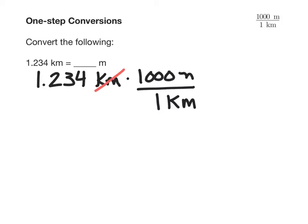When I divide kilometers on top by kilometers, they'll cancel. So that's good. We're going to be left with meters on top, and rewriting this as 1.234 times 1,000 meters.